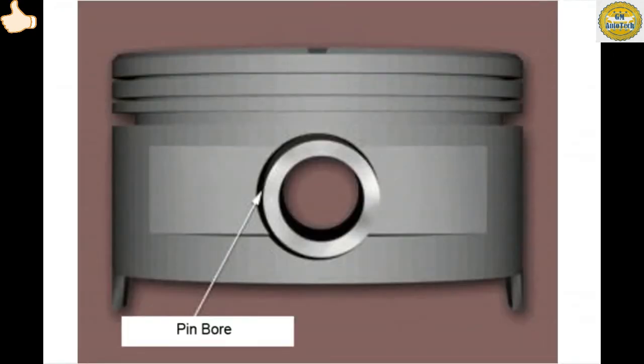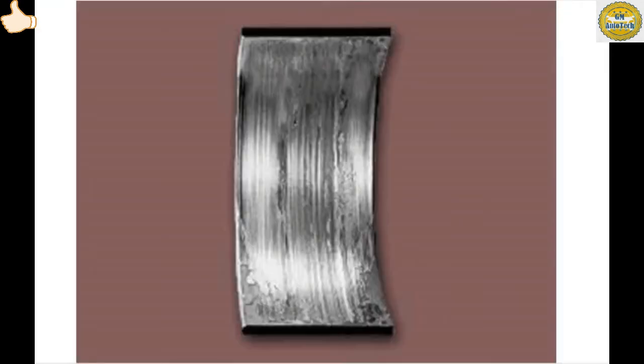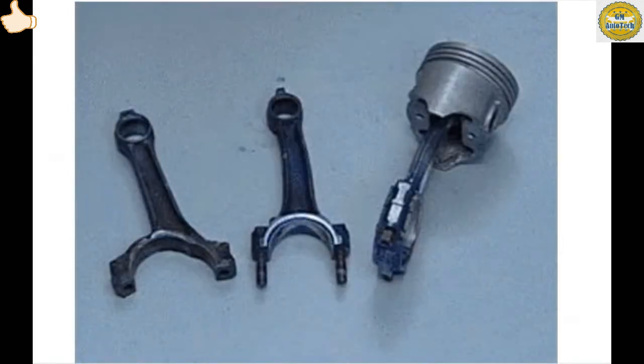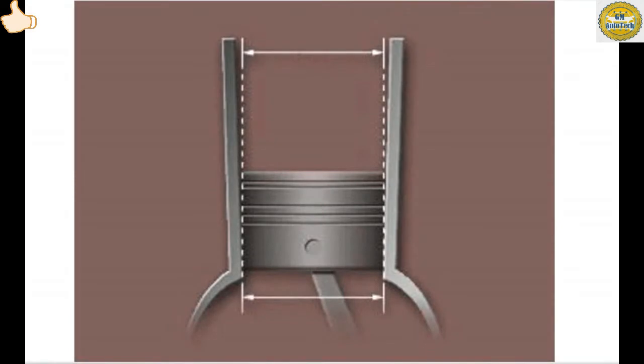A worn piston pin bore can cause a knock. Worn rods, worn rod bearings, or broken rod cap bolts can cause engine knock. Rods that are bent or stretched can cause an engine knock. A cylinder wall that is out of round or tapered can cause an engine knock.